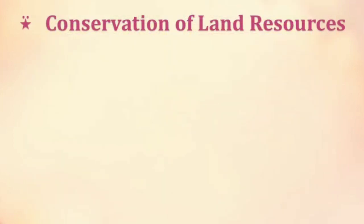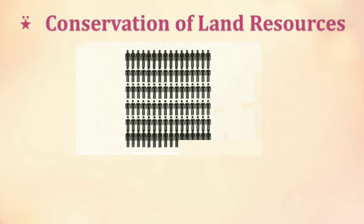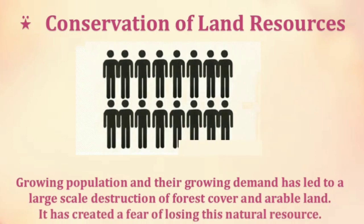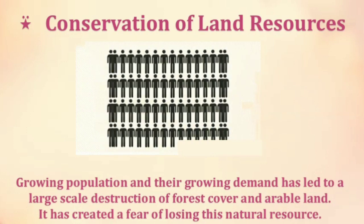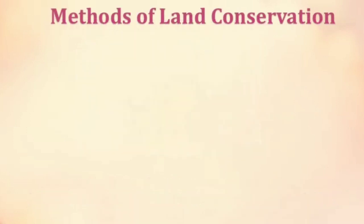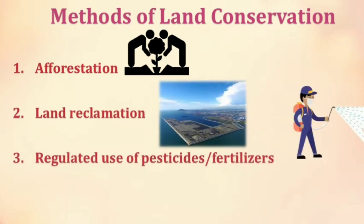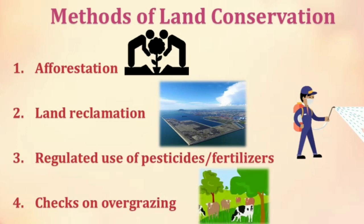Now let us learn the conservation of land resource. The growing population and their ever growing demands has led to large scale destruction of forest cover and arable land and has created a fear of losing this natural resource. Therefore, the present rate of degradation of land resources must be checked. A few methods of conservation of land could be afforestation, land reclamation, regulated use of chemical pesticides and fertilizers, and to keep a check on overgrazing. These common methods could be used to conserve land.